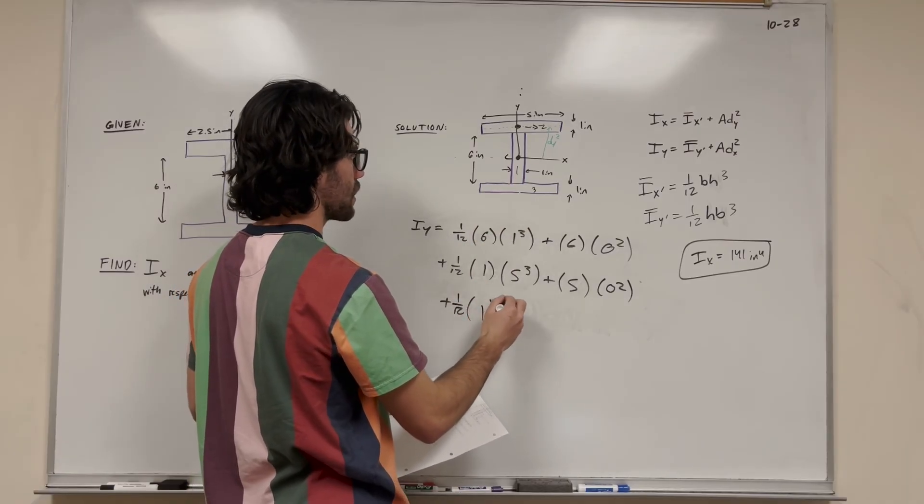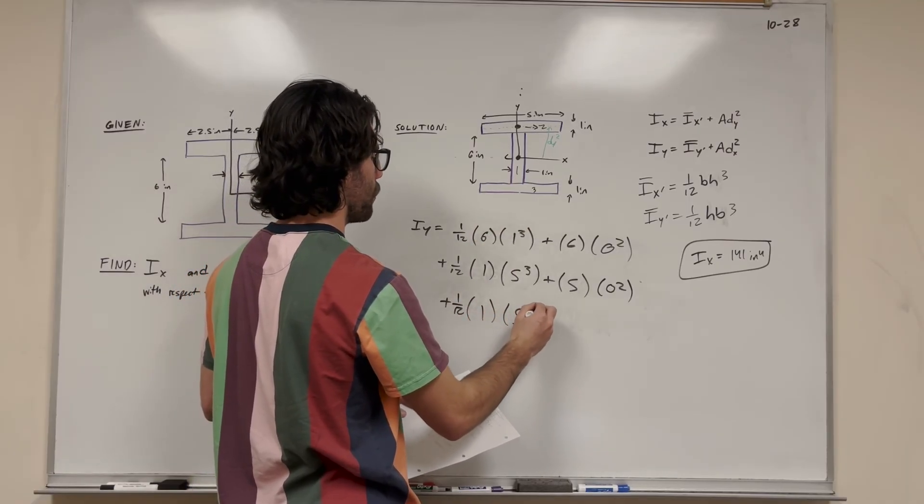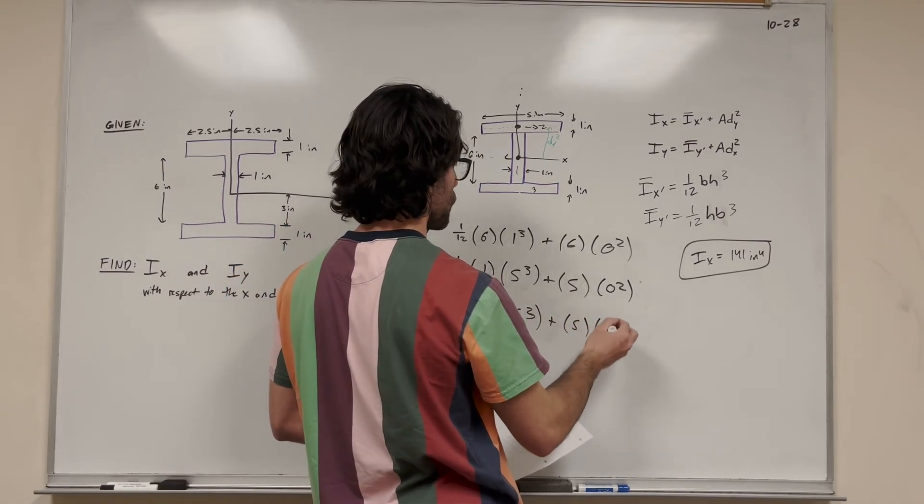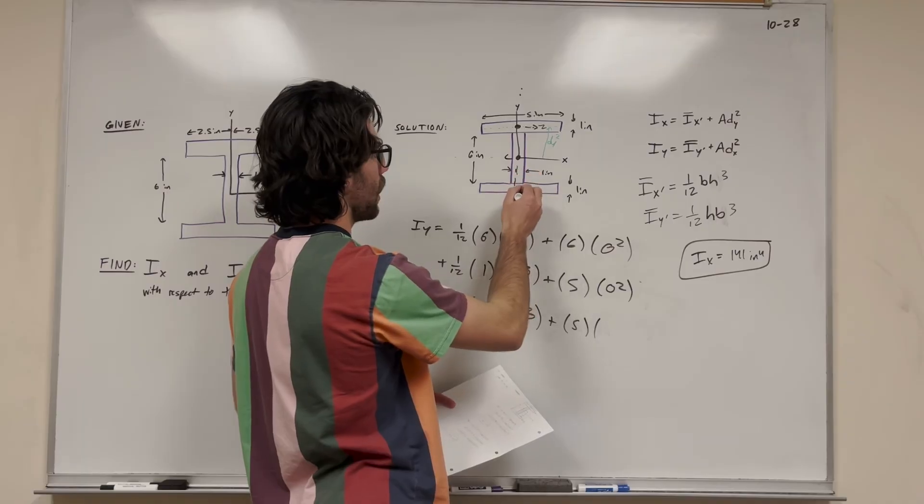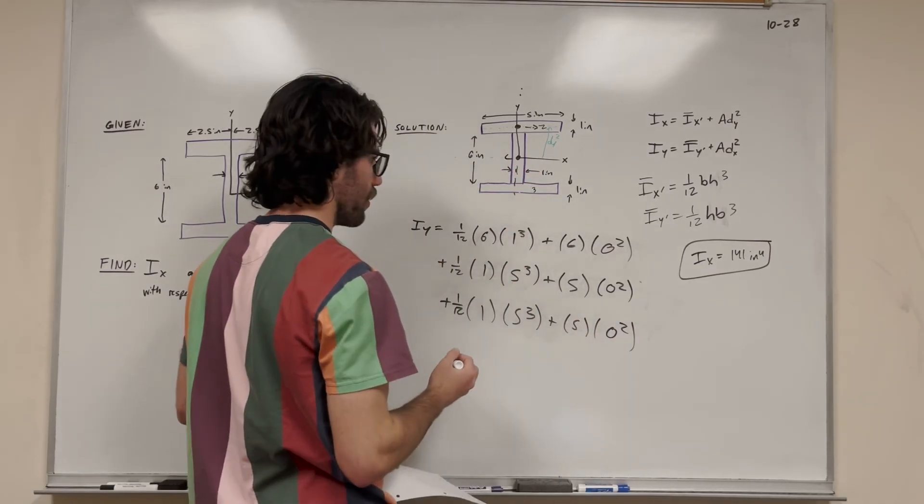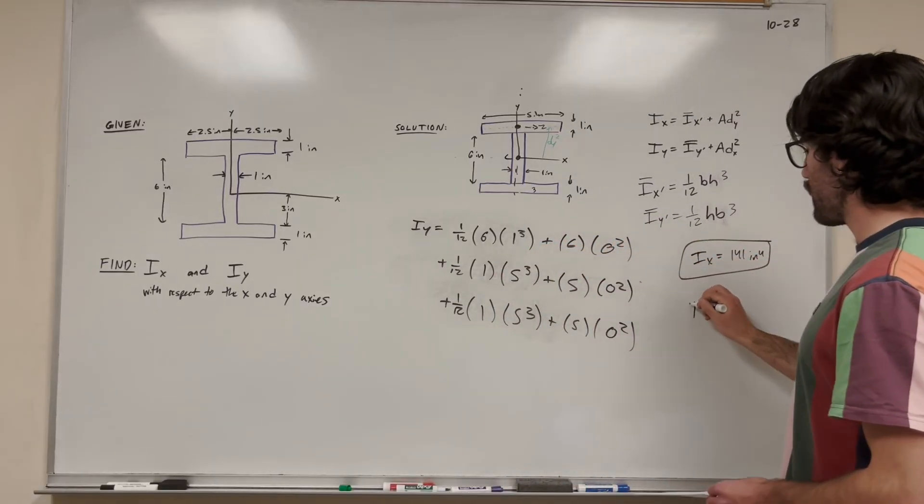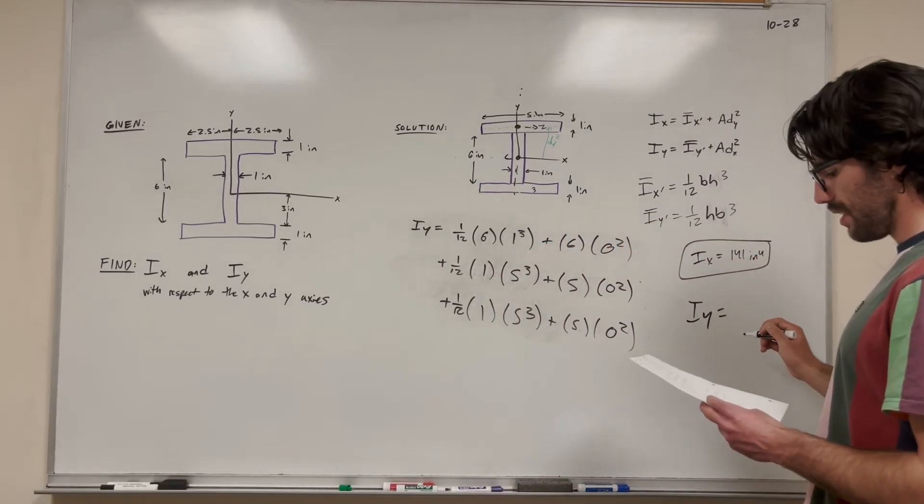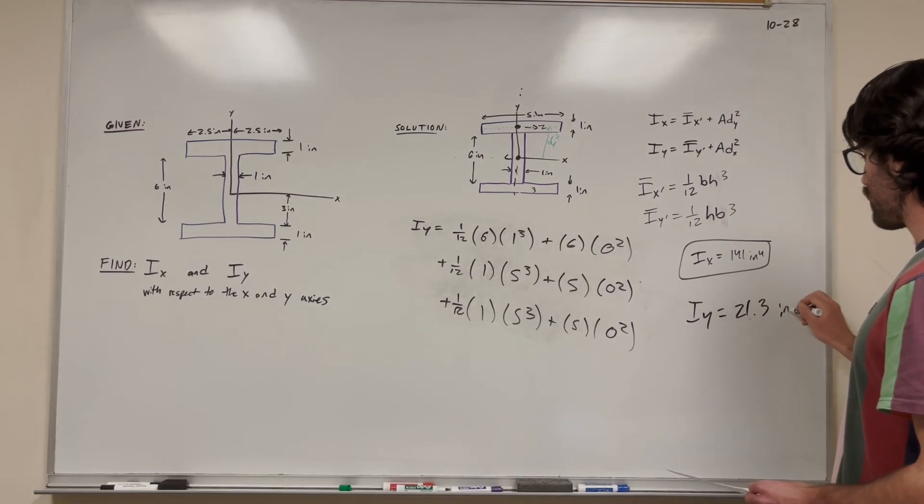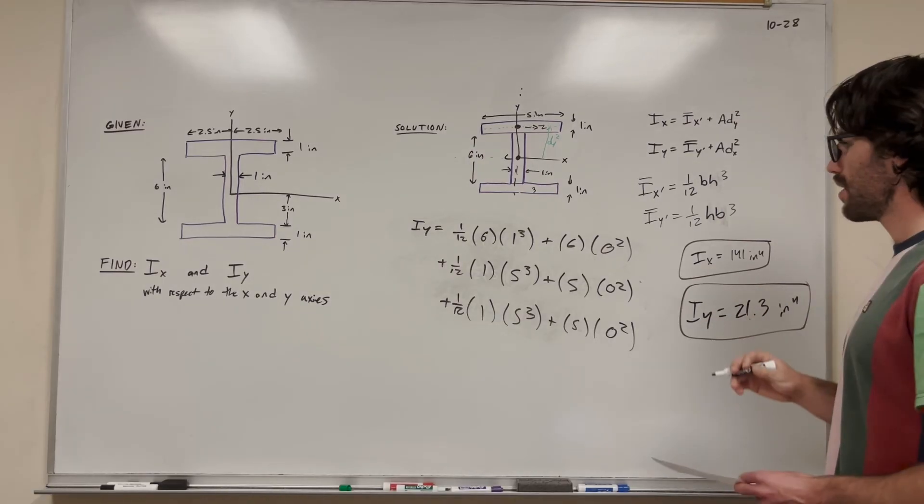For the last shape, number 3: height is 1, base is 5. So 1/12 times 1 times 5 cubed. Its area is 5, and distance x is again 0 because it lies right on that axis. If we do this, we find that Iy equals 21.3 inches to the fourth. And there we go.